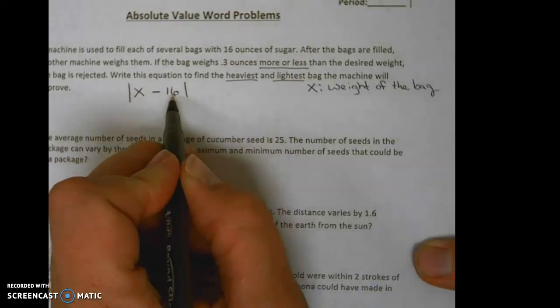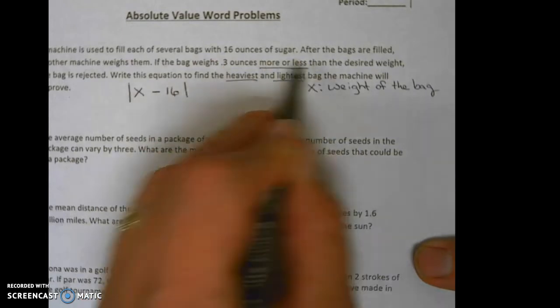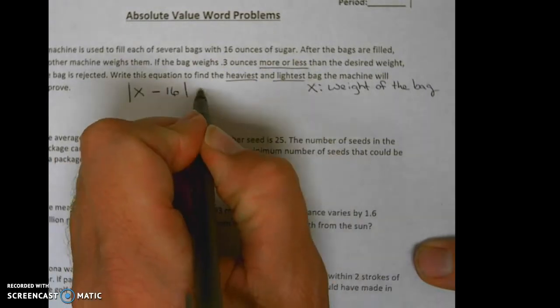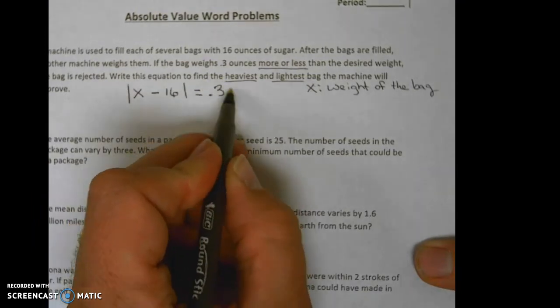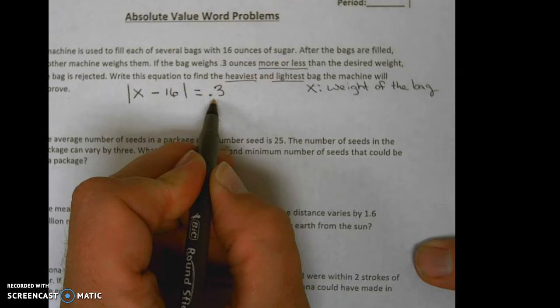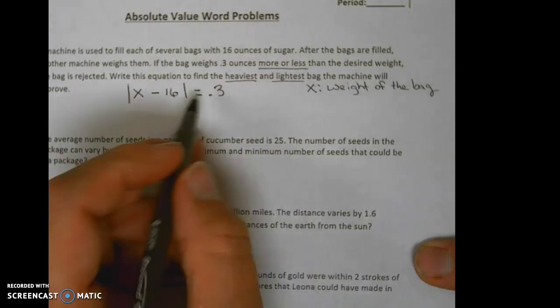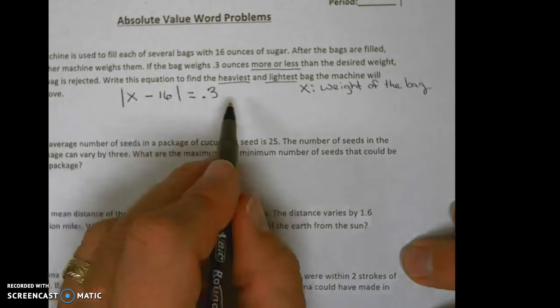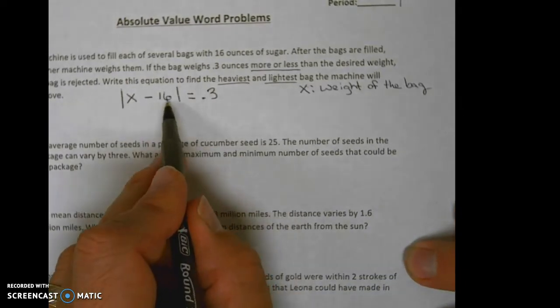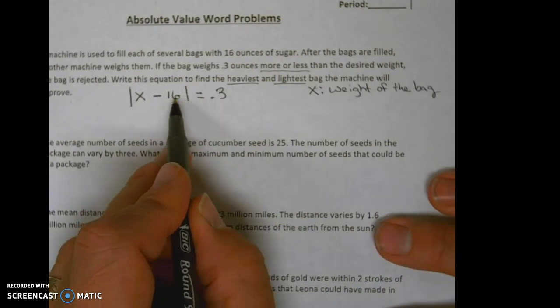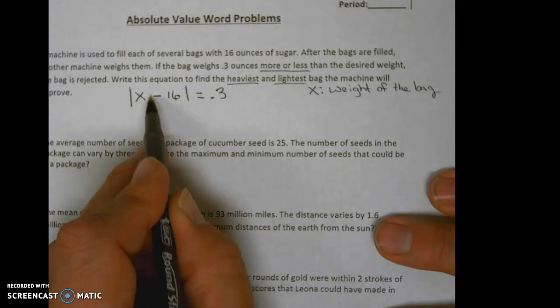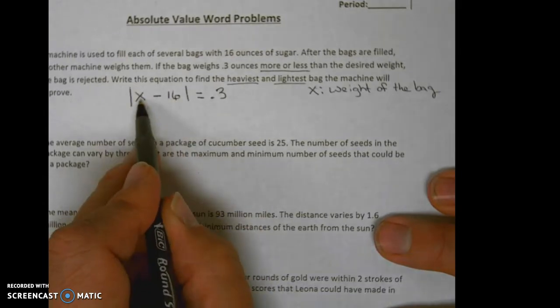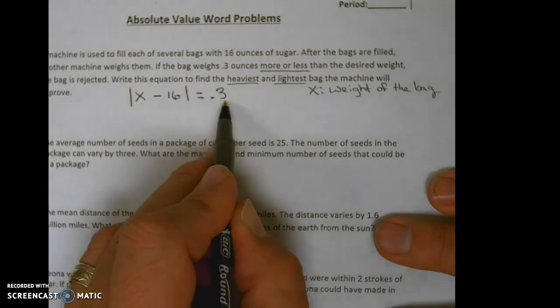Now remember, this number here represents the amount of sugar, so we have to take that amount out of the weight of the bag so that way we know how much the bag weighs. The bag can't be more than 0.3 or less than 0.3.